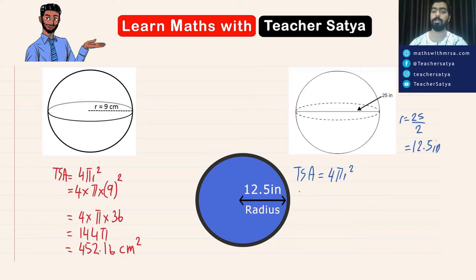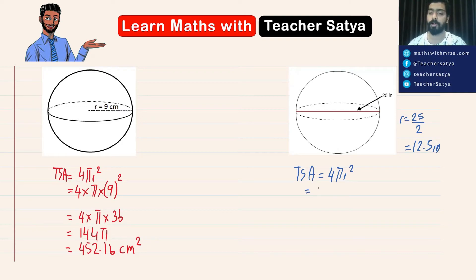Now let's take these values and plot them in this formula. So we would have 4 multiplied by π multiplied by 12.5 to the power of 2.